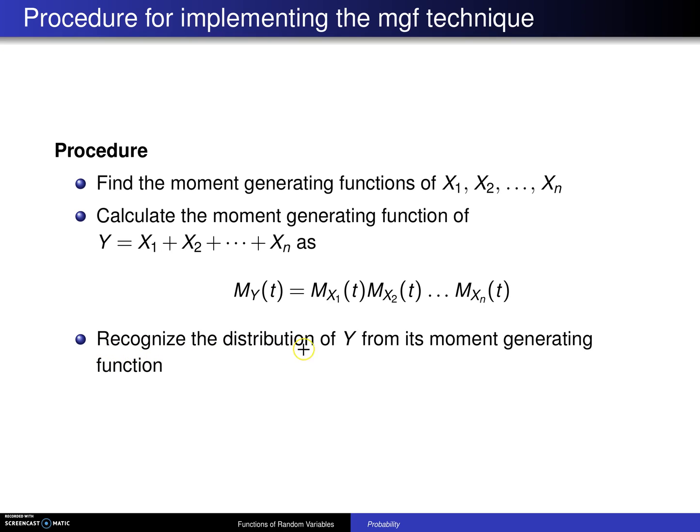And third, recognize the distribution of Y, which is the sum, from its moment generating function. Now, you certainly don't have all of the moment generating functions memorized, and neither do I. So, there is a table in the book, and that table is Table 7.1.